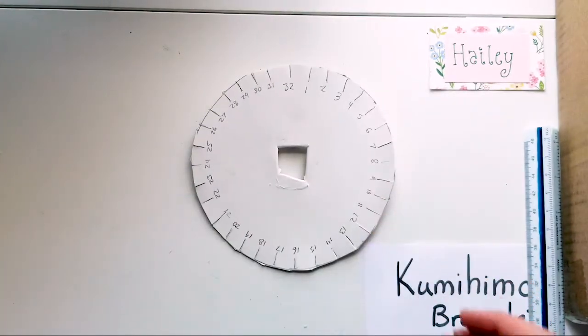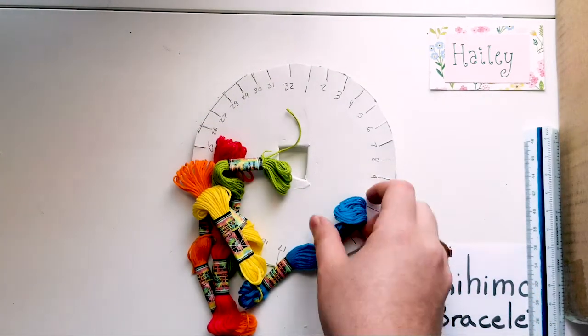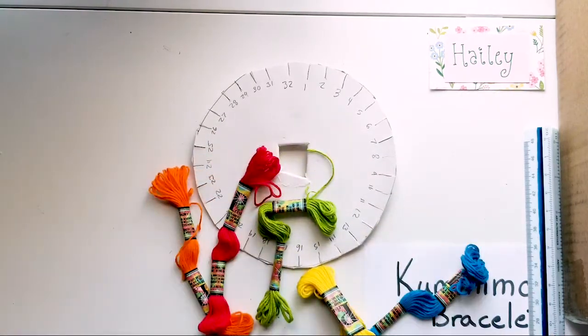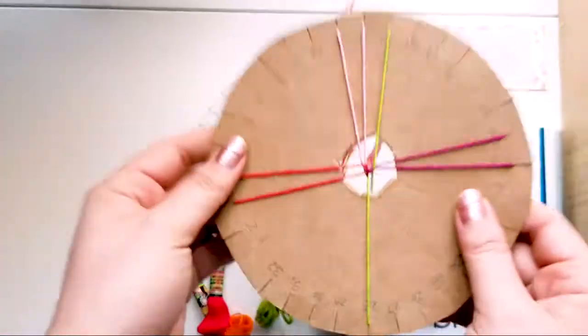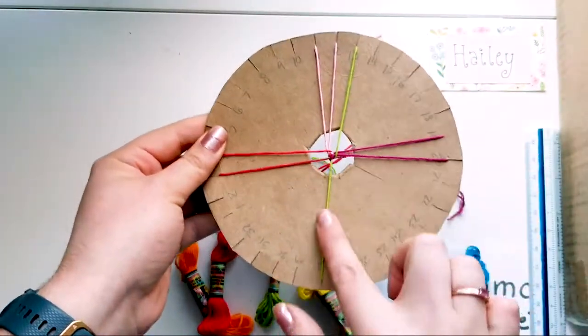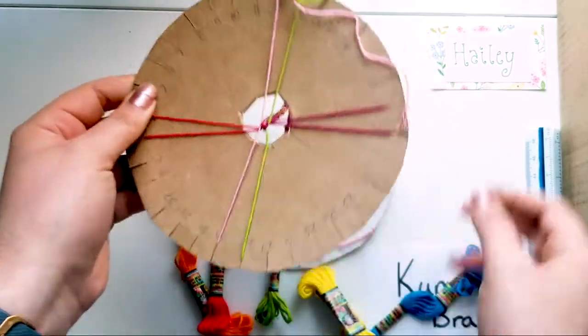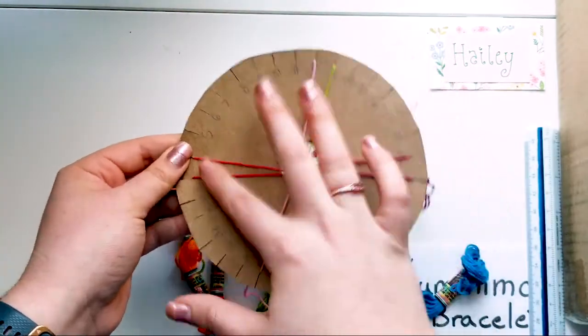From there, we get our string. So for this project I'm going to be using, I'm going to be doing the same setup I used for this one, where I have four pairs of two strings. This one should actually be down here. But four pairs of two strings.